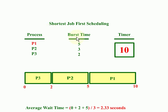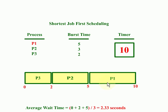The waiting time of P3 is 0 seconds. P2 had to wait 2 seconds because P3 was executing for 2 seconds before P2 started. P1 had to wait 5 seconds — the combined burst times of P3 and P2 — before starting its execution. Once P1 started, it took 5 seconds to complete. We are executing the shortest job first and then going for bigger ones, which is why the order is P3, then P2, then P1.